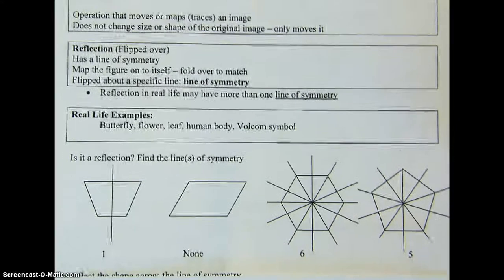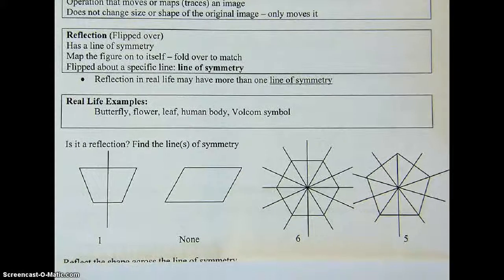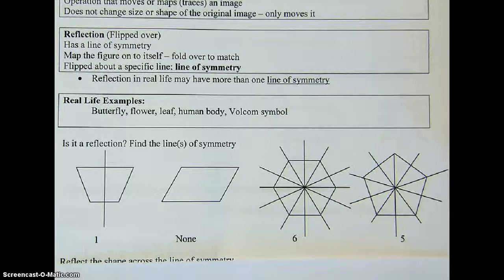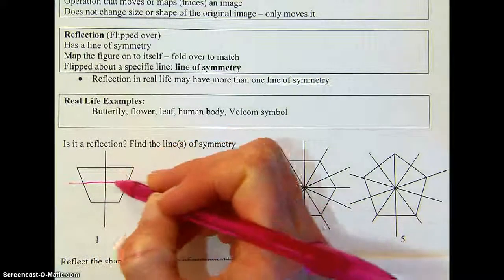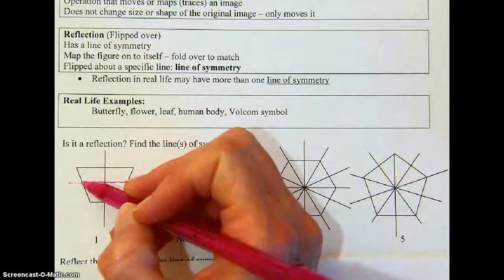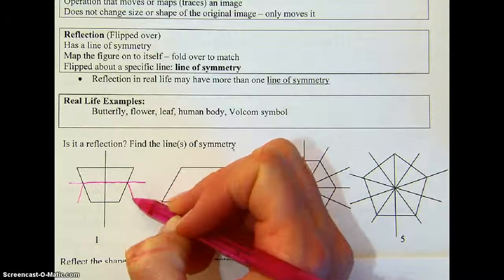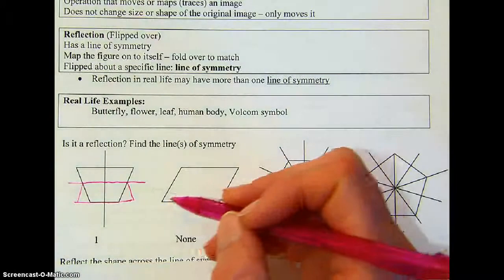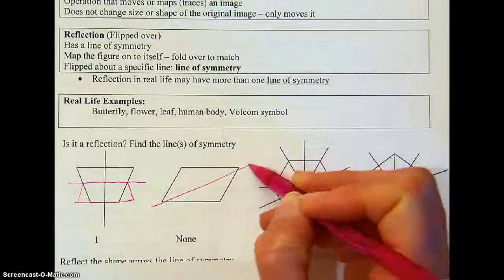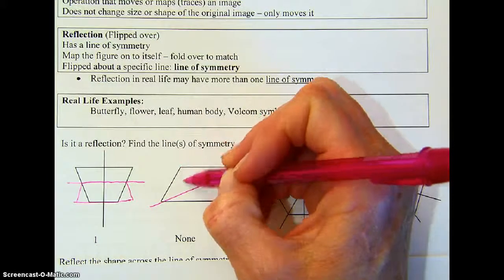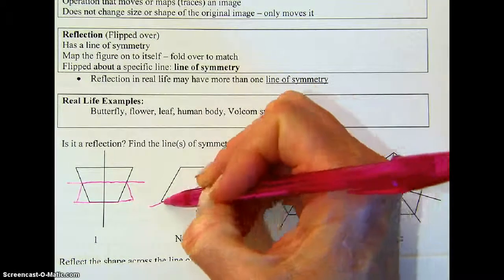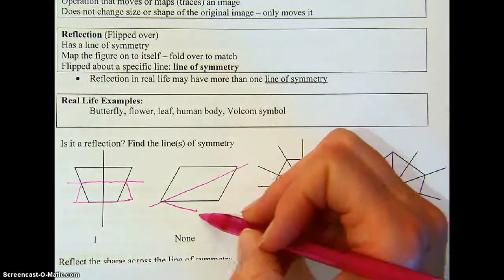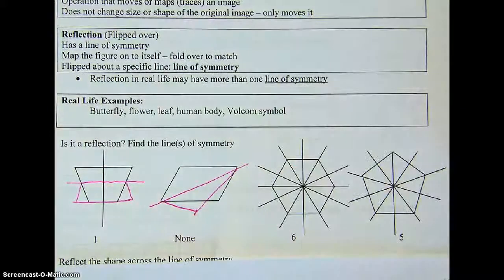The first shape has one line of symmetry right down the center. We cannot draw a line of symmetry in the other direction because if we folded it over, it would not match — so it's definitely not symmetrical that way. The second shape, although it kind of looks symmetrical, is not. If we reflected it, it would look more like a kite, so there is no line of symmetry in that one at all.